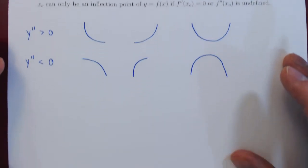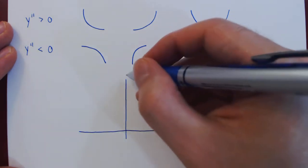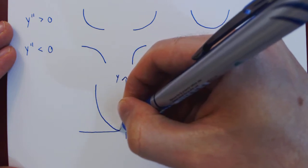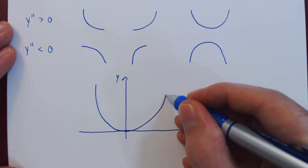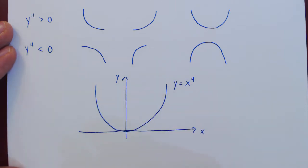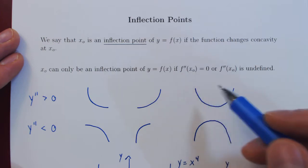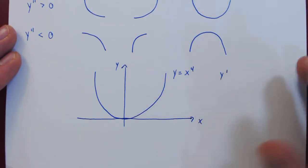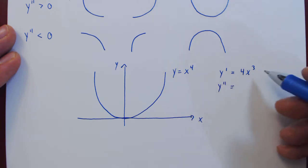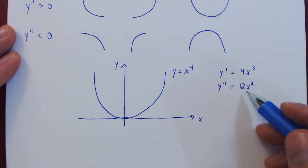To show this, we can give a simple example. We will look at the graph of the familiar function y equals x to the 4. Notice that the function is always concave up. The first derivative of x4 by the power rule is 4x cubed. The second derivative, again by the power rule and the constant multiple rule, is 12x squared.